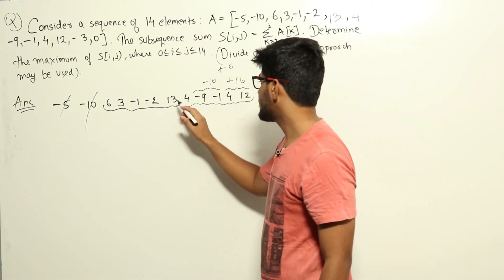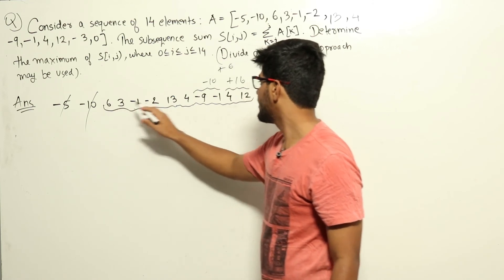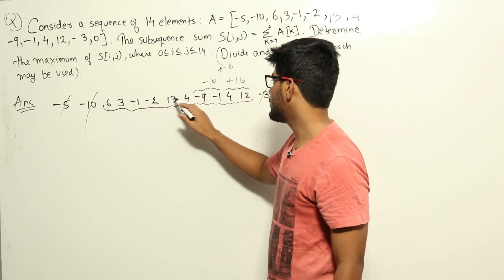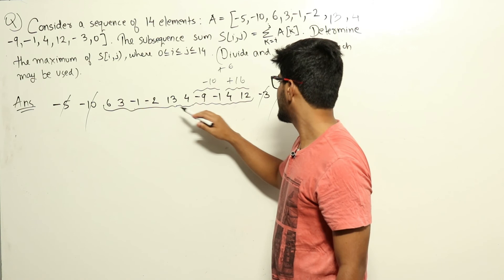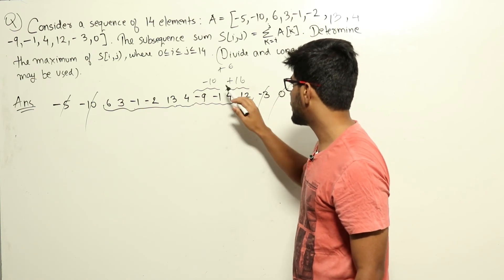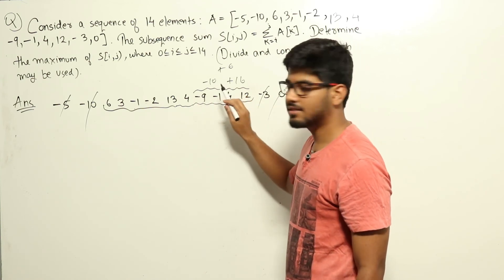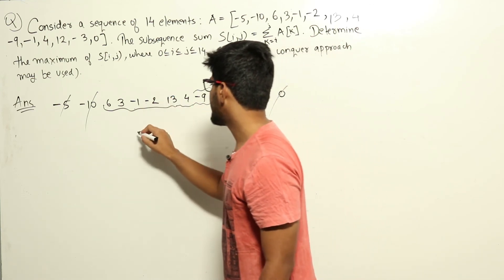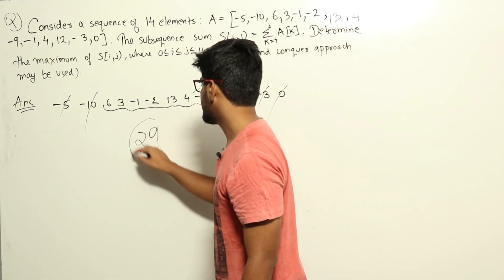So the total was how much? 6 plus 3 is 9, 9 plus 13 is 22, plus 4 is 26, plus 4 is 30, plus 12 is 42, minus 10 is 32, minus 3 is 29. So the final answer is 29.